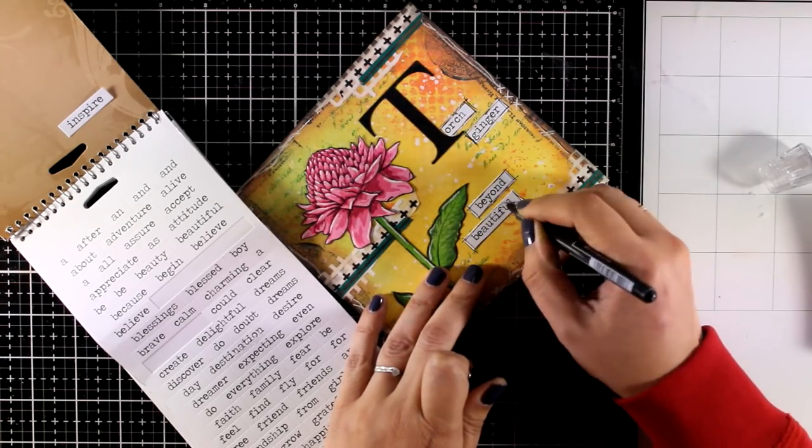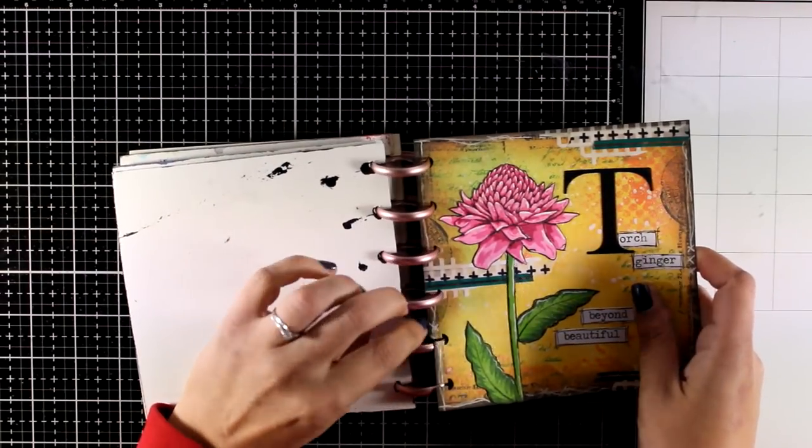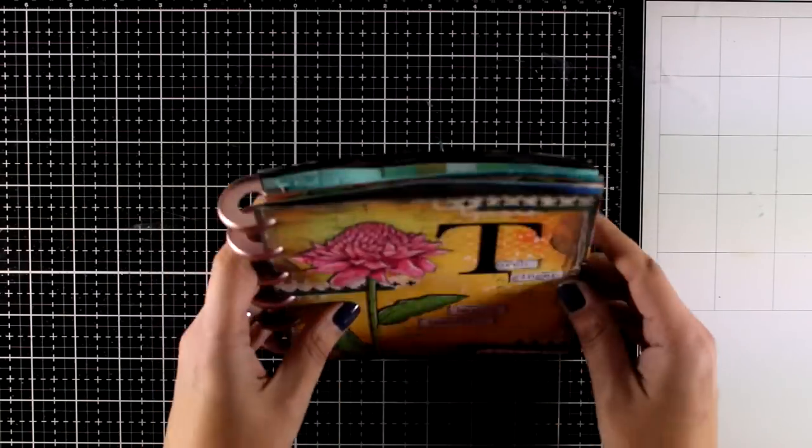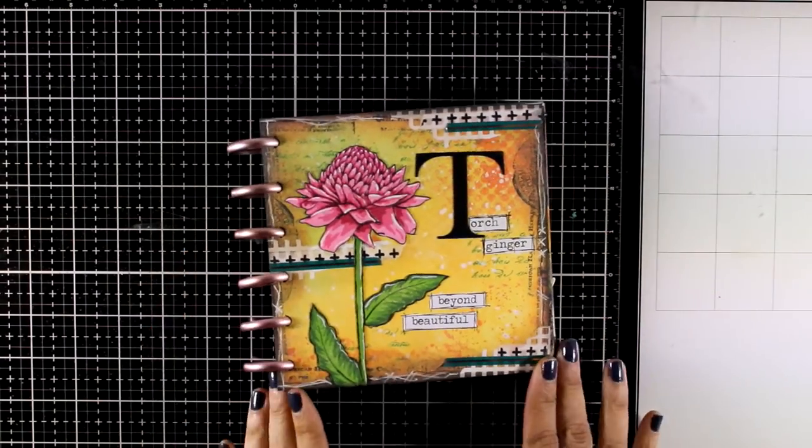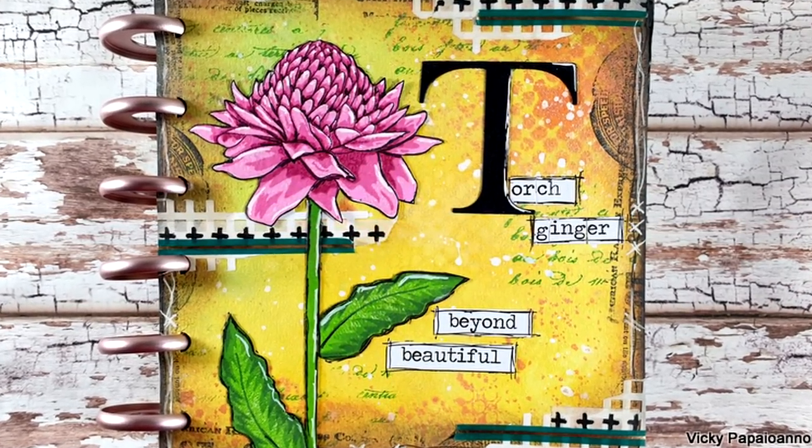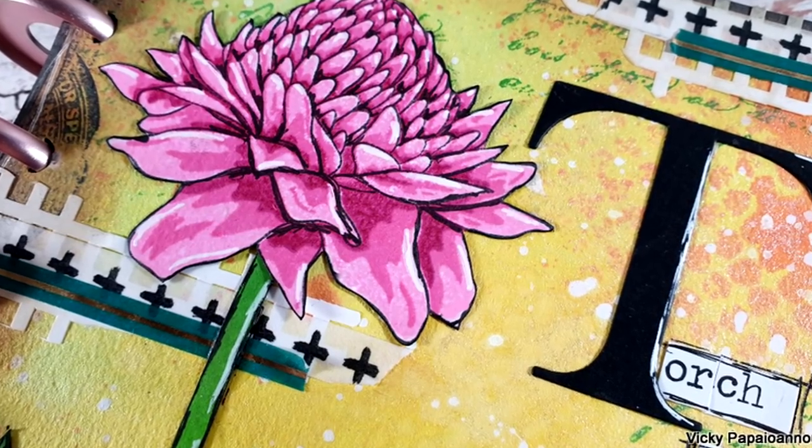I finally used the punch to add the holes on my page and put it back on my art journal. This was the project for today showcasing the new paint a flower stamp set by Altenew. I hope that you had fun and got inspired. Thank you all so much for watching today, and I'll see you all next time.